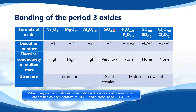Silicon dioxide has a giant covalent structure with very low or no electrical conductivity, because it has no free moving ions in the molten state. The same is true for the remaining oxides — they have a molecular covalent structure, so when molten they have no free moving ions and are poor conductors of electricity.